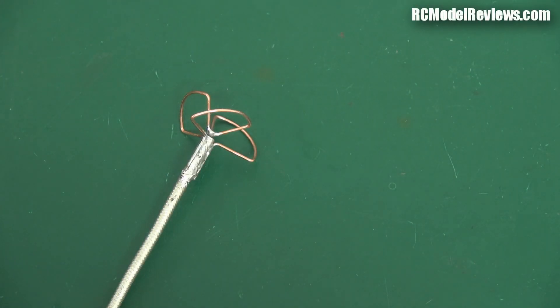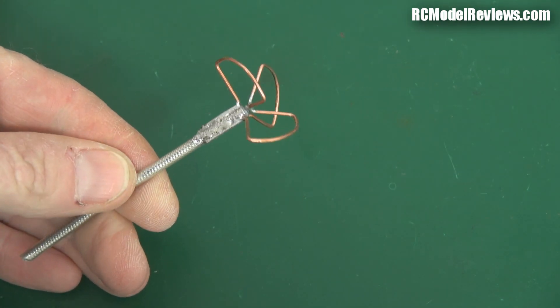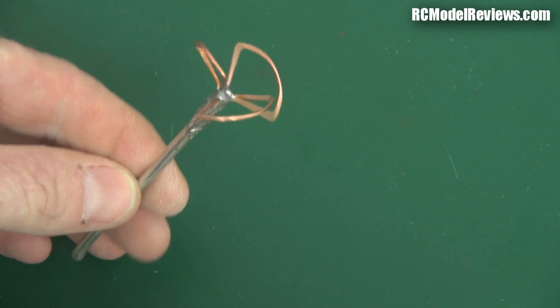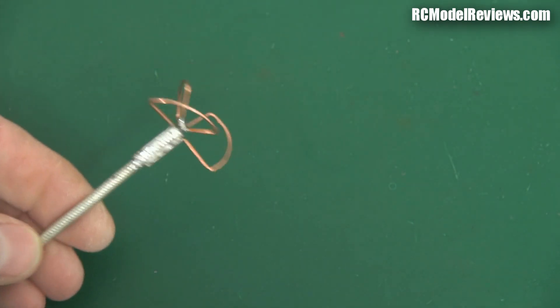Hello and welcome back to RC Model Reviews. I've already shown you how to make these circularly polarized cloverleaf antennas for your 5.8 gigahertz FPV equipment, and I've linked to that video in the description.